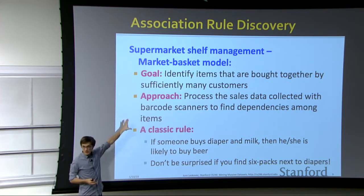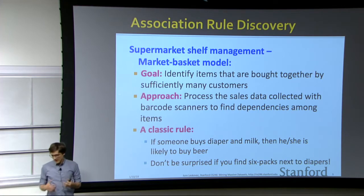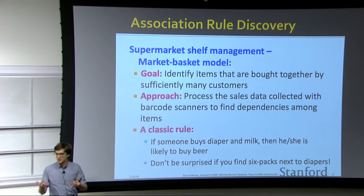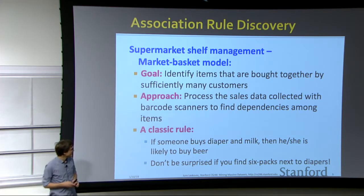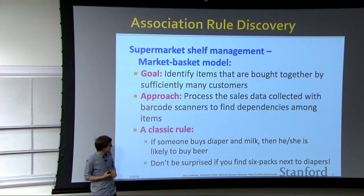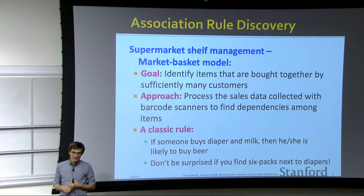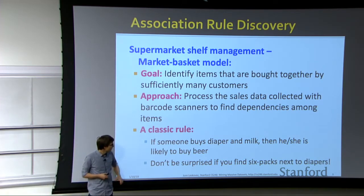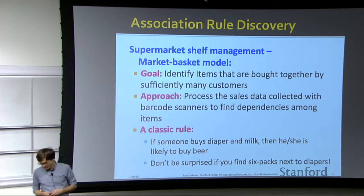In this market basket analysis case, we want to process point-of-sale data collected by barcode scanners to find dependencies between items and products that users buy. Our goal is to find association rules — for example, a very famous one: if somebody buys diapers and milk, then they are also likely to buy beer. Using this type of knowledge, we can optimize shelf space and make recommendations. So don't be surprised if you see diapers, milk, and beer close together in the store.